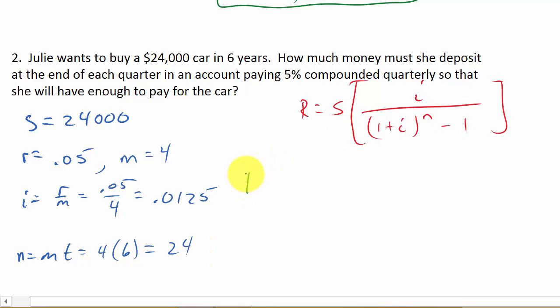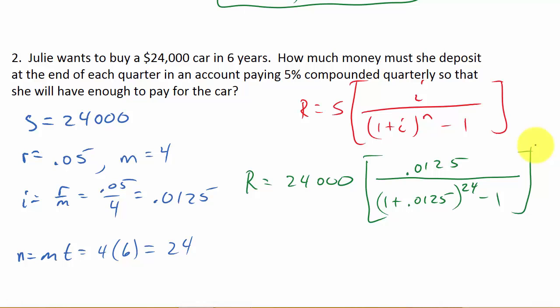So now let's plug all this into the formula. So R is 24,000, that's the S, times I, and in this case I is 0.0125, over 1 plus I, 0.0125, raised to the N, which is 24, minus 1. And then when I plug all that in, 1.0125 raised to the 24th, minus 1, and then I'm going to do the reciprocal of that and times the numerator 0.0125, and then times the 24,000. And that is going to be my payments at the end of each quarter. So that's going to be $863.68. And there's my answer.